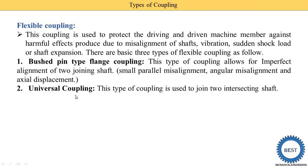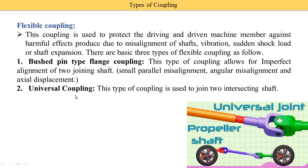The second type is the universal coupling. Here you see the diagram of the universal coupling. It is used in propeller shaft systems of vehicles — in a car or truck there is a propeller shaft, and this is connected using the universal coupling.